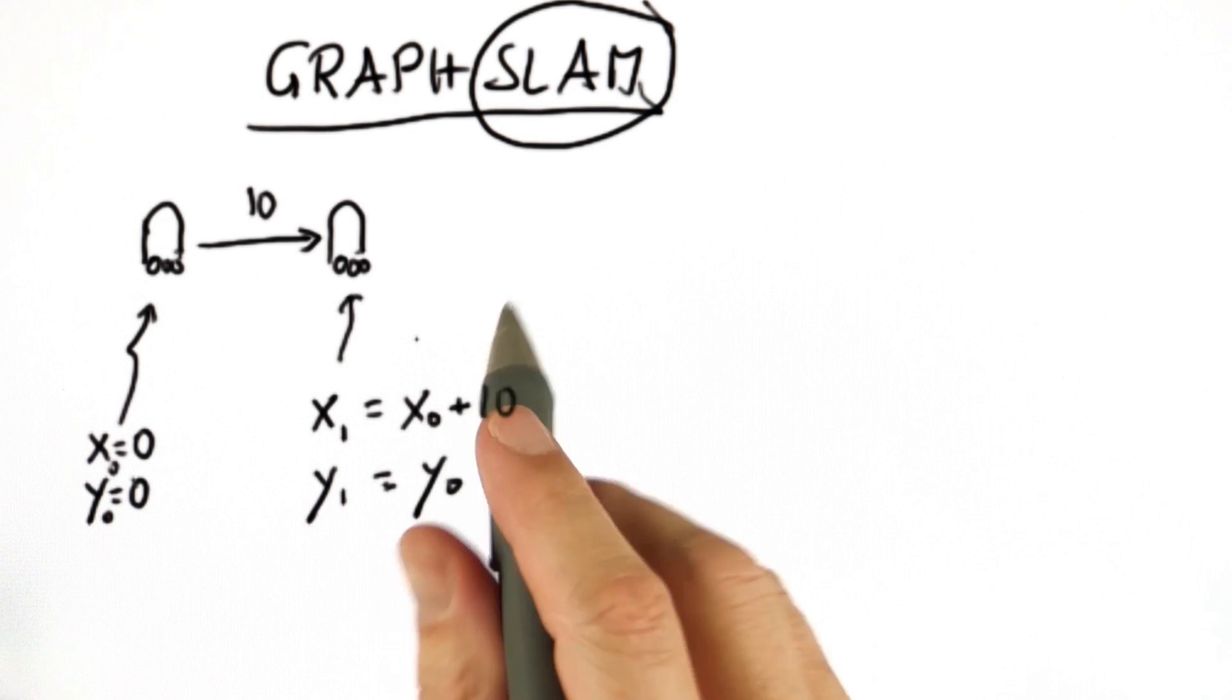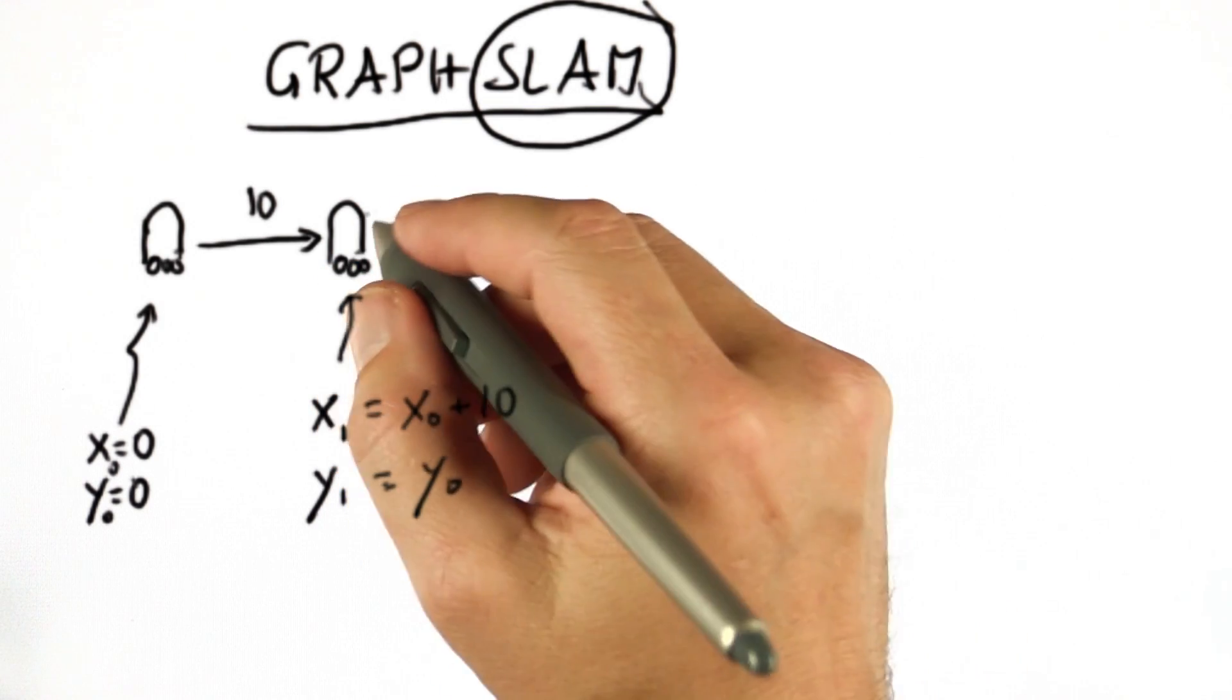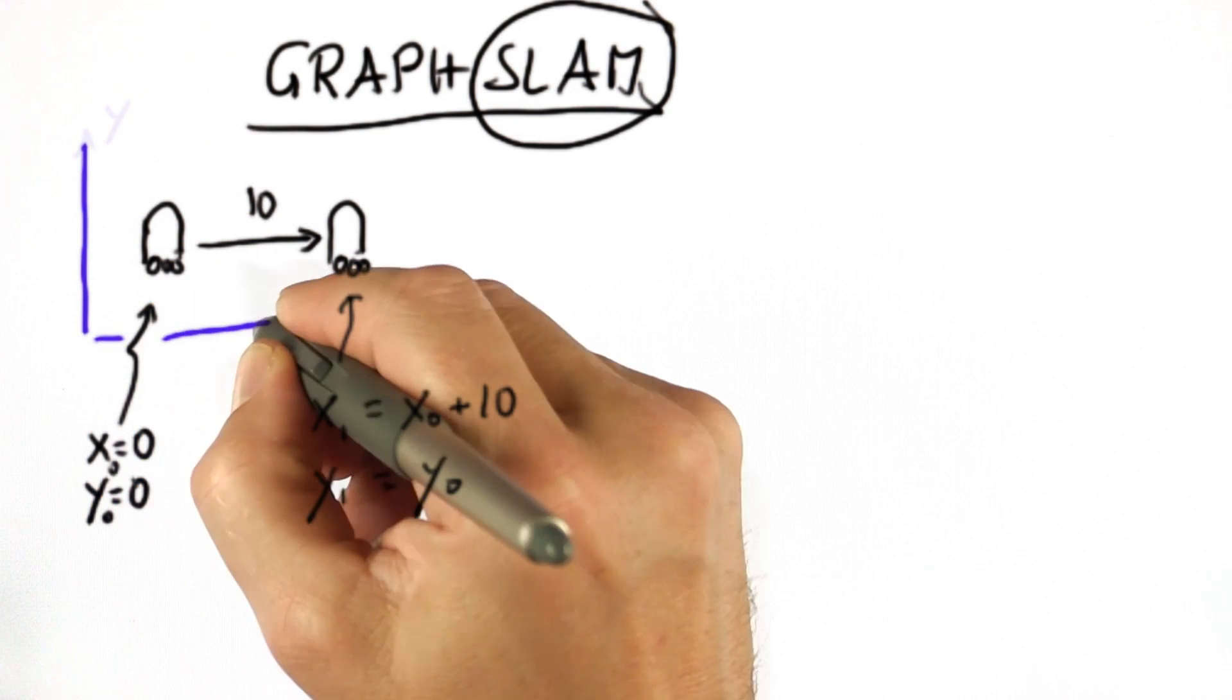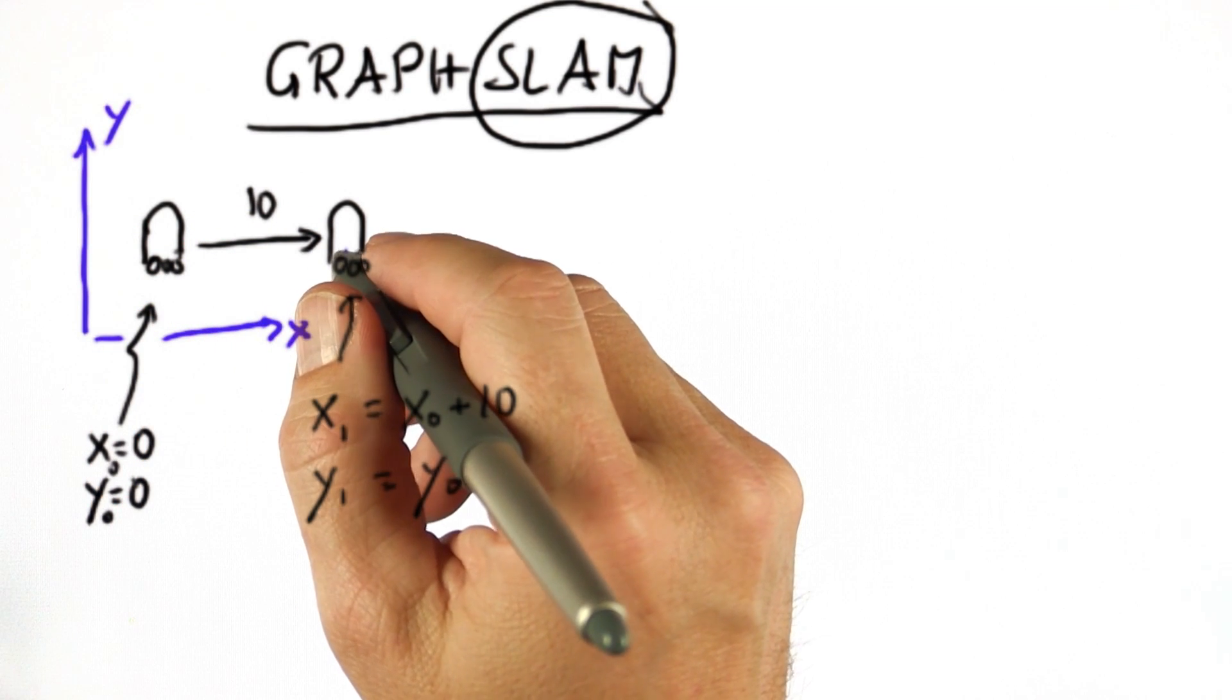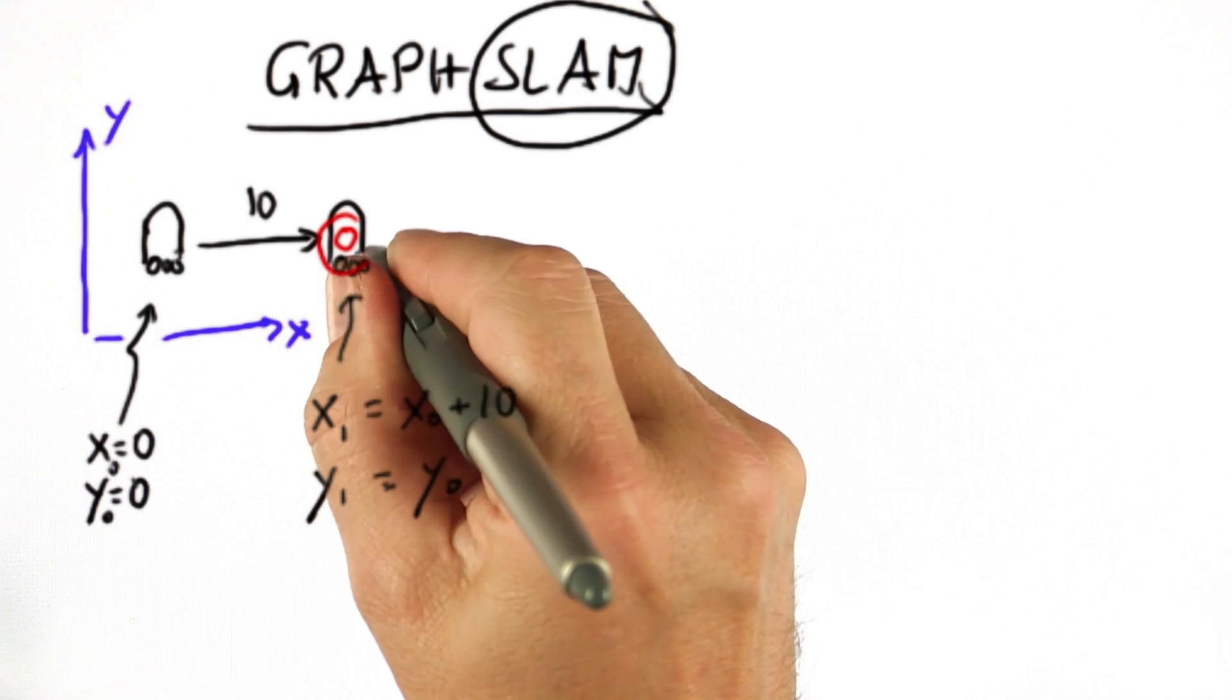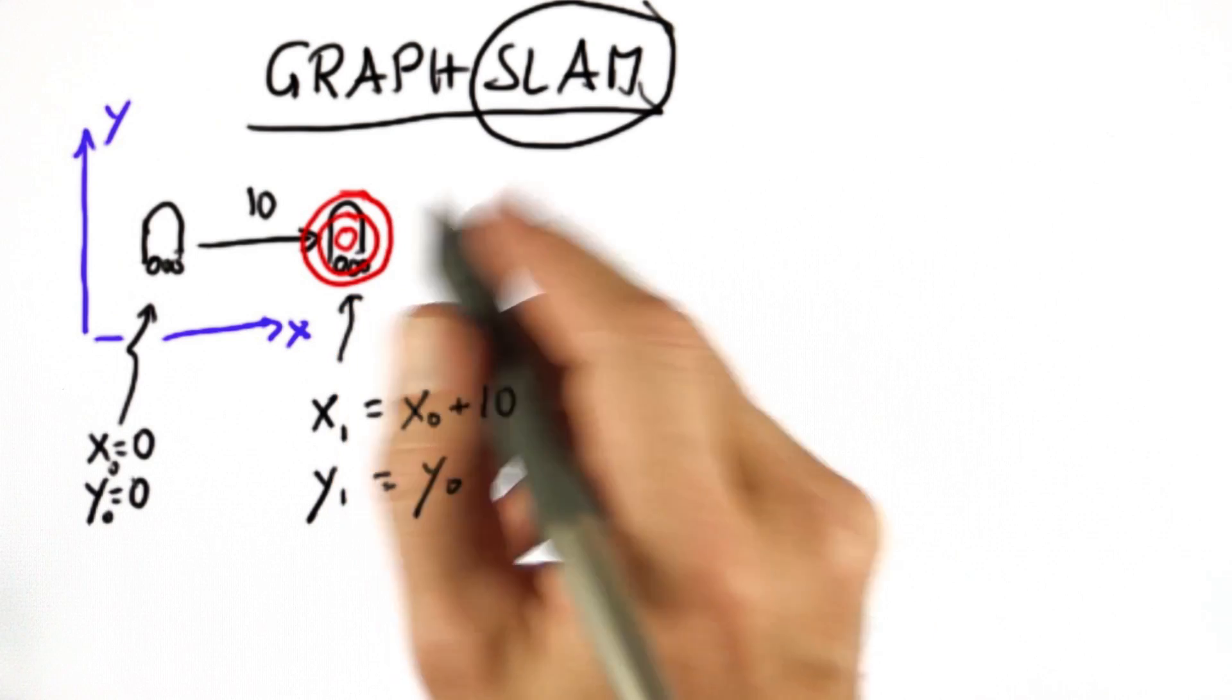But we learned from our various robotic Kalman filter lessons and others that the location is actually uncertain. So rather than assuming in our xy coordinate system the robot moved to the right by 10 exactly, we know that the actual location is a Gaussian centered around 10, 0, but it's possible the robot is somewhere else.